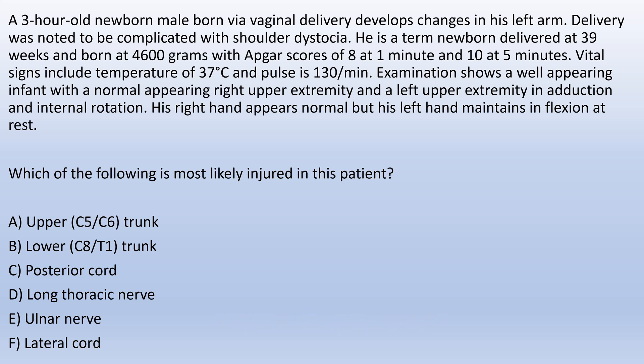A three-hour-old newborn male born via vaginal delivery developed changes in his left arm. Delivery was noted to be complicated with shoulder dystocia. He is a term newborn delivered at 39 weeks and born at 4,600 grams with APGAR scores of 8 and 10 respectively. Vital signs include a temperature of 37 and a pulse of 130.